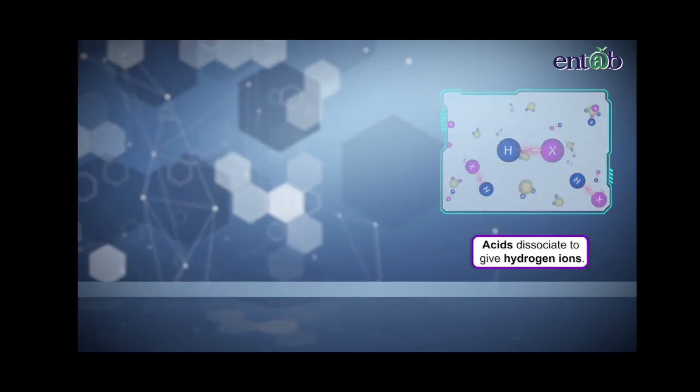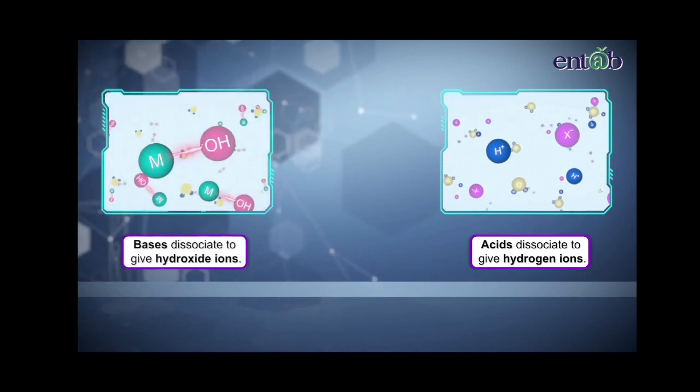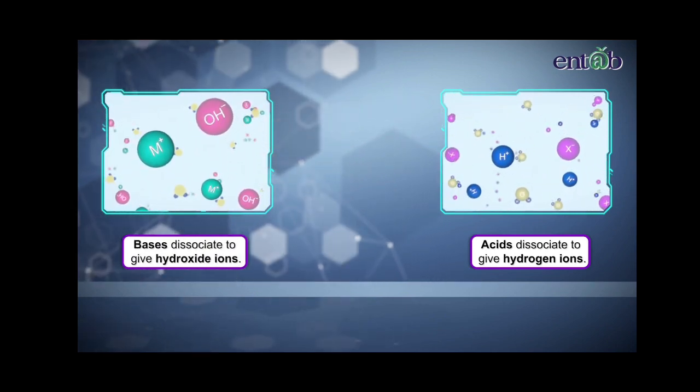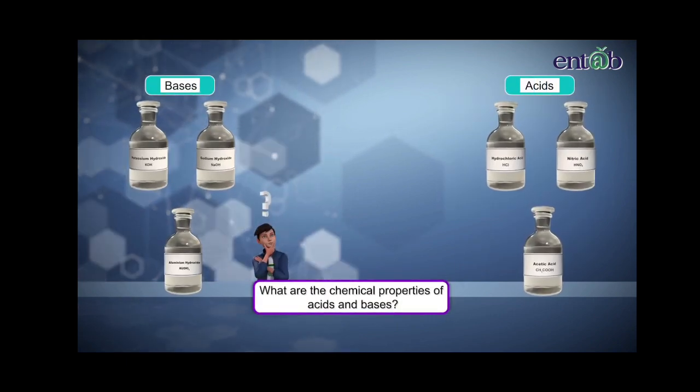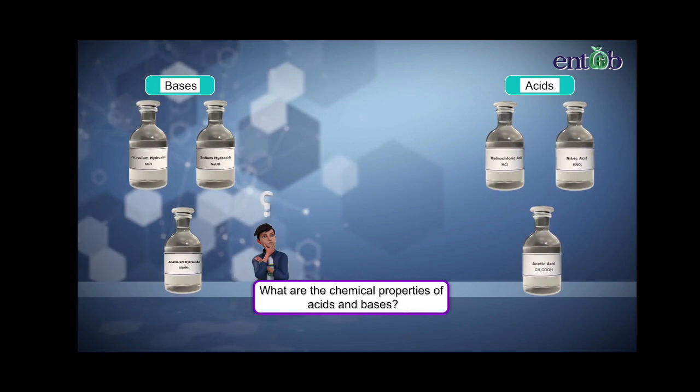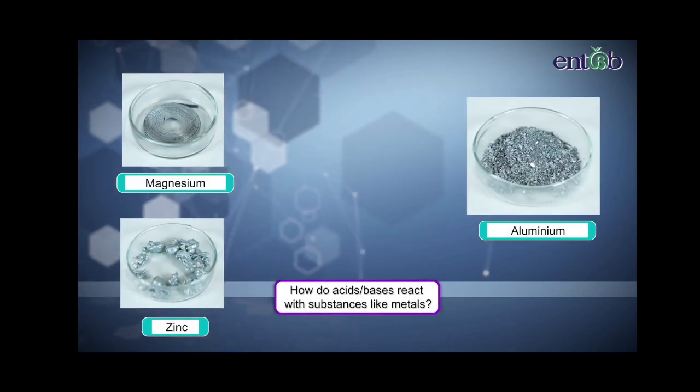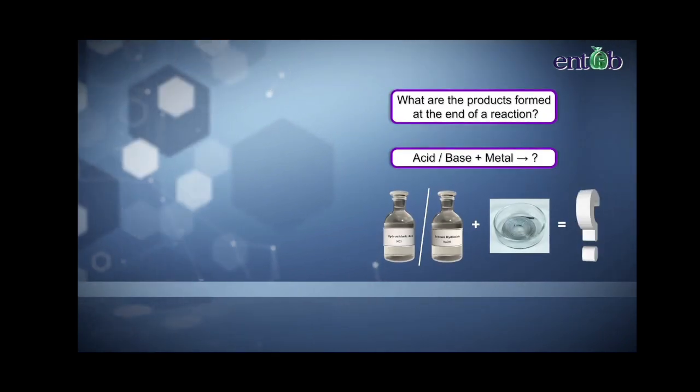Hello everyone. So far we have analyzed that acids dissociate to give hydrogen ions whereas bases dissociate to give hydroxide ions. The question we must ask ourselves is what are the chemical properties of these acids and bases? How do they react with other substances like metals? What are the products formed at the end of a reaction? To understand this, let's perform one activity.